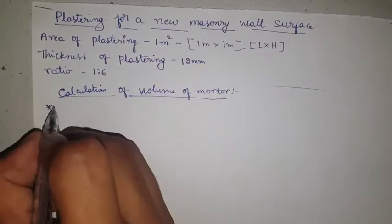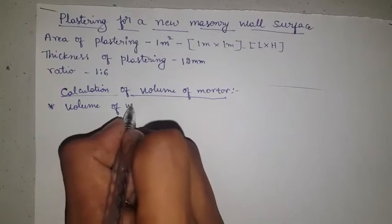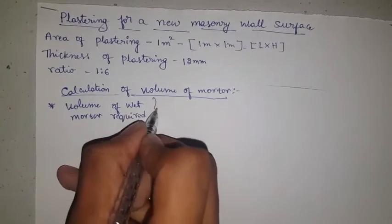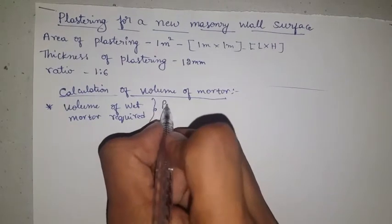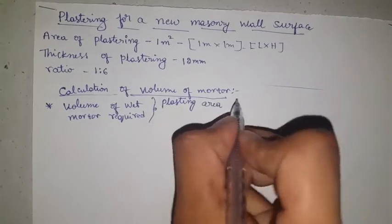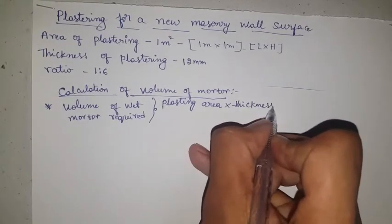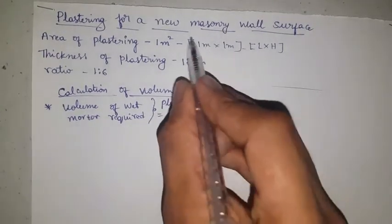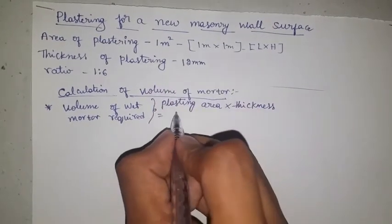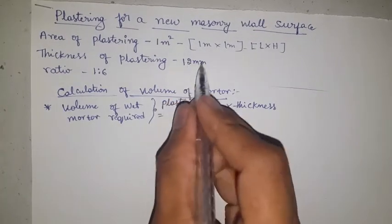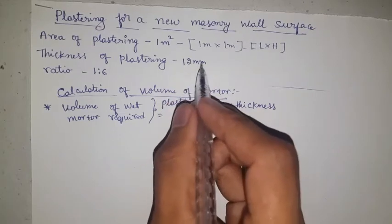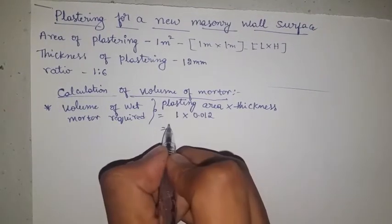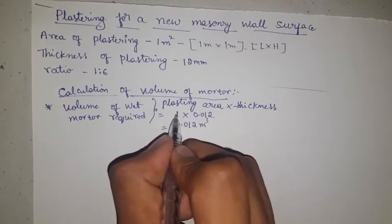Volume of wet mortar required. Volume is calculated as: plastering area into thickness = volume of mortar. Plastering area is 1 meter square (1 meter into 1 meter), into thickness.